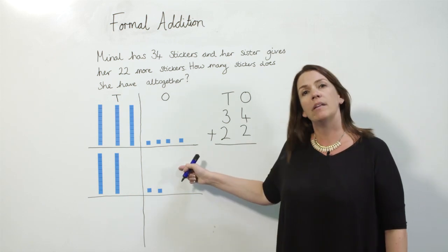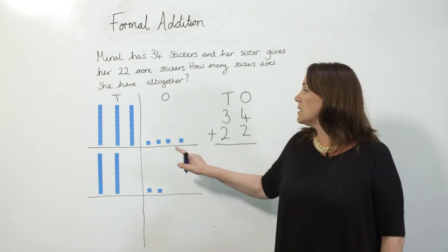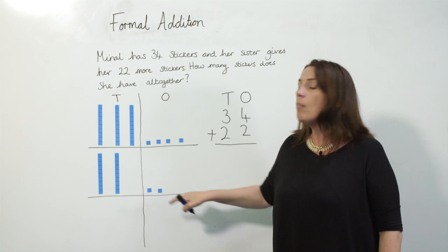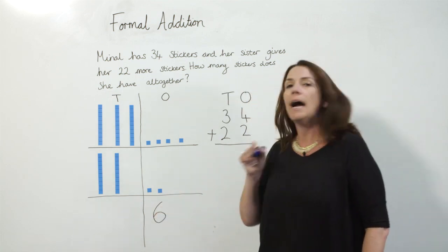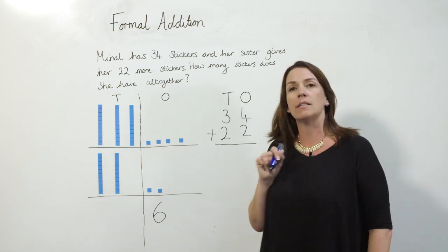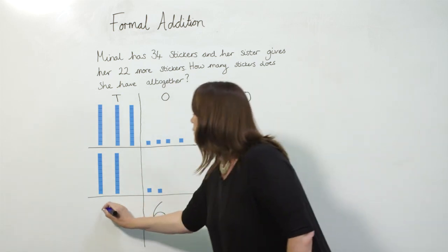Now if we use our base 10 materials to add up you can see that in the ones column we've got 4 plus another 2 which would give us 6 and then in the tens column we have 30 plus another 20 which would give us 50.